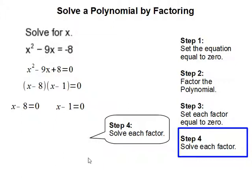Step 4: solve each factor. We're going to solve for x here. You add 8 on both sides to get x by itself, so x equals 8.